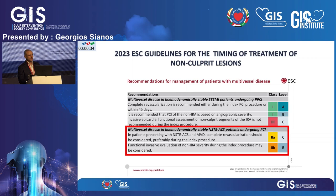While there are no large trials exclusively focused on NSTEMI, the 2023 guidelines now provide clear guidance. In hemodynamically stable patients with NSTEMI ACS and multivessel disease, complete revascularization should be considered — preferably during the index procedure. Based on the available FFR-guided data, this recommendation is supported with a specific level of evidence.